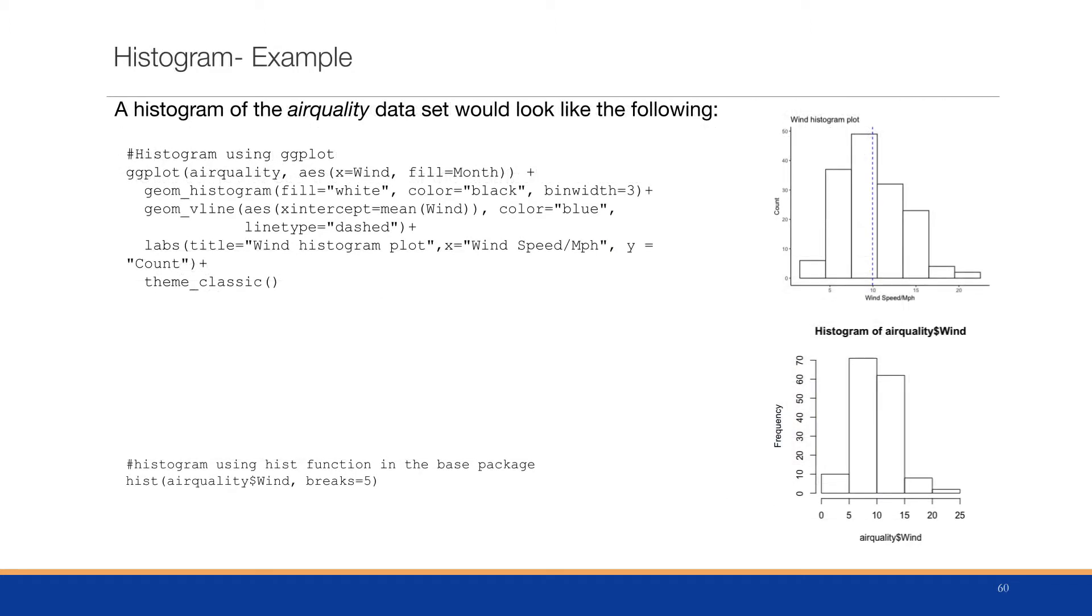In this example, we have the air quality dataset, and we're going to do a histogram using the ggplot function. ggplot is another library that gives us very rich graphs, and we'll use this function to produce the histogram. We can see that the histogram has the count for each one of the buckets, and we have seven buckets in this histogram.